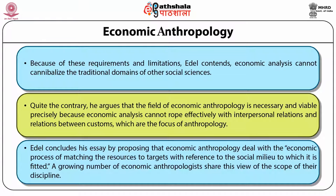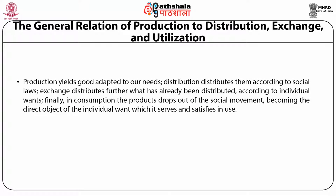A growing number of economic anthropologists share this view of the scope of the discipline. Regarding the general relations of production to distribution, exchange and utilization: production yields goods adapted to our needs; distribution distributes them according to social laws; exchange distributes further what has already been distributed according to individual wants. Finally, in consumption, the product drops out of the social movement, becoming the direct object of the individual want which it serves and satisfies in use.